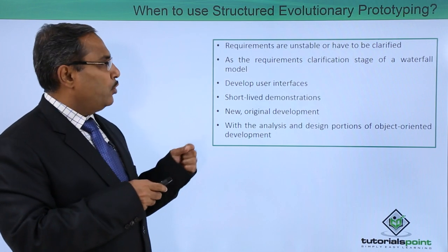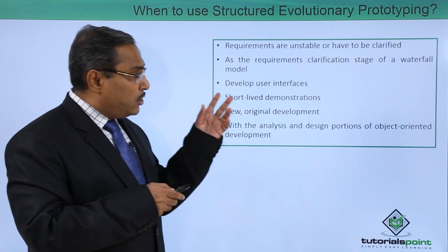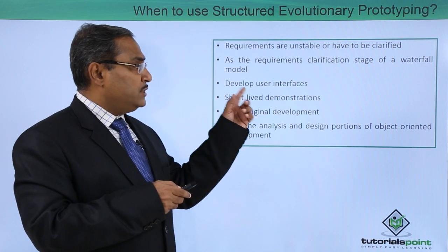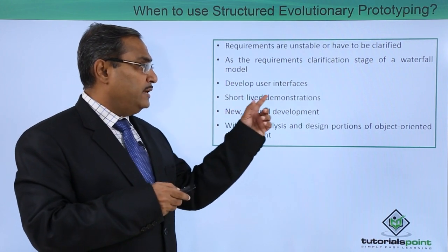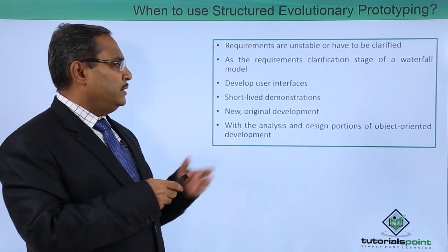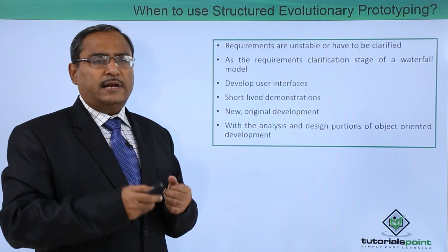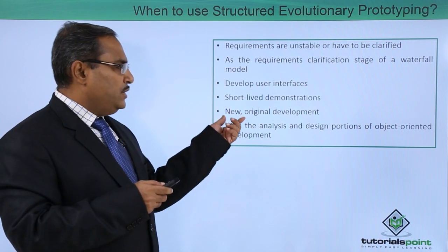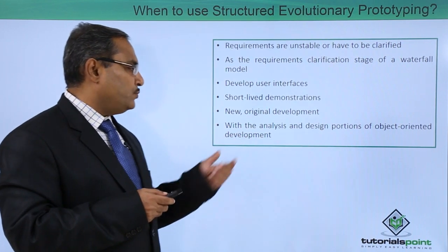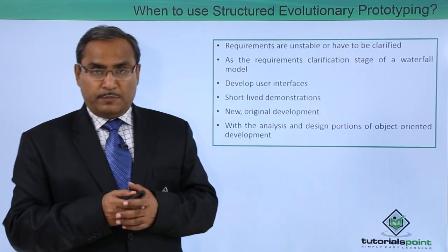When should you use this prototyping model? When requirements are unstable or need to be clarified — at the requirements clarification stage of a waterfall model. Also for developing user interfaces, short-lived demonstrations, new original development, and during the analysis and design portions of object-oriented development. These are the cases where the prototyping model can be implemented.